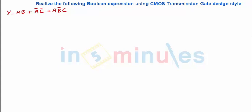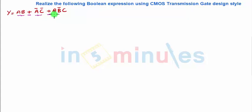The expression given to us is Y = (A·B) + (Ā·C̄) + (A·B̄·C), where '+' means OR and '·' means AND.